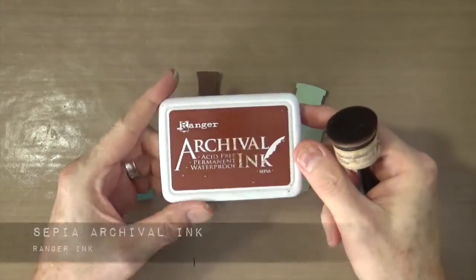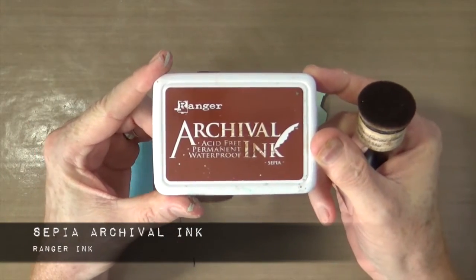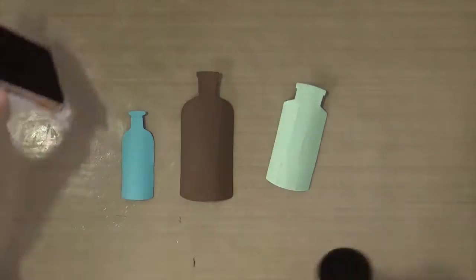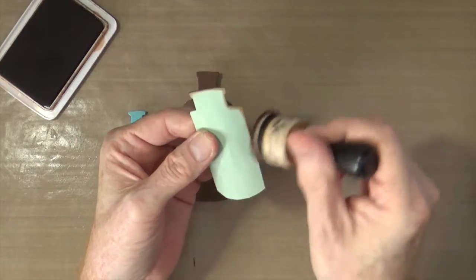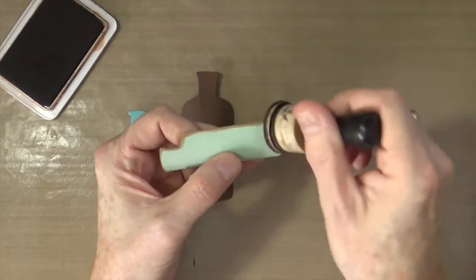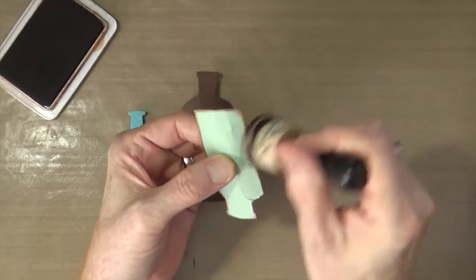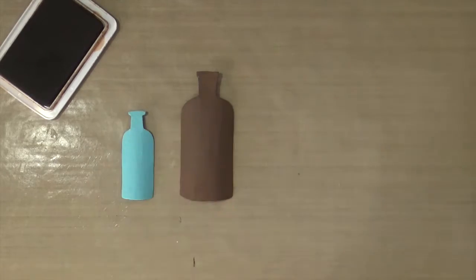To give my bottles some aging, I'm using the sepia archival ink from Ranger and an ink blending foam. I'm going around all the edges and catching some highlights on the body of the bottles to give them more of a 3D effect.